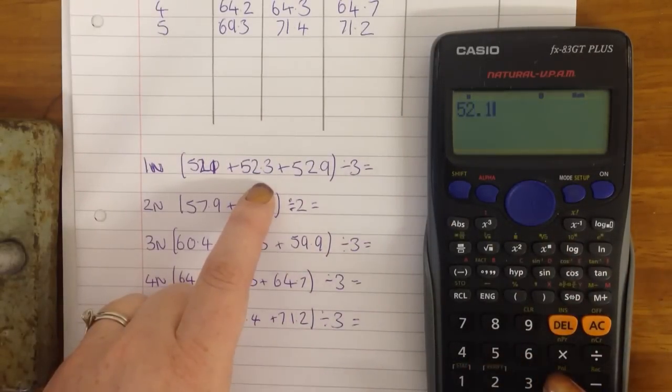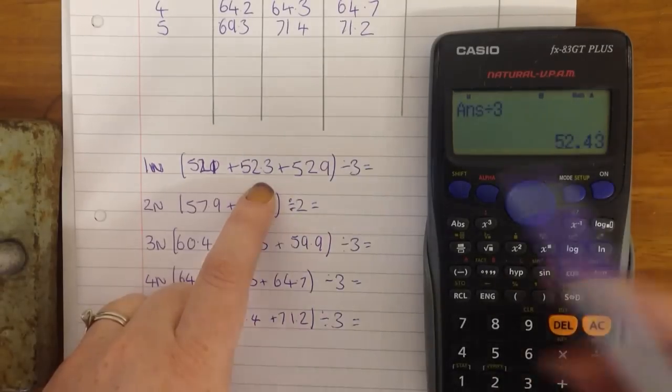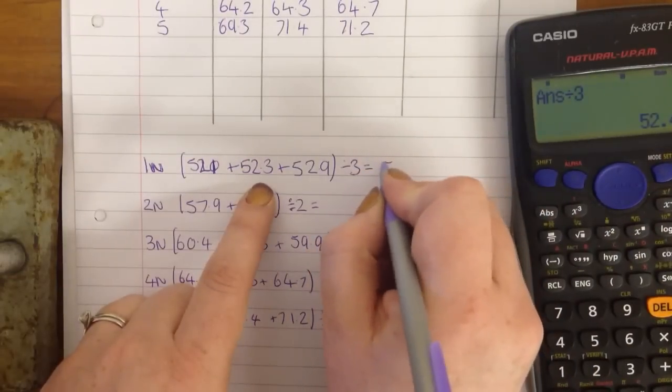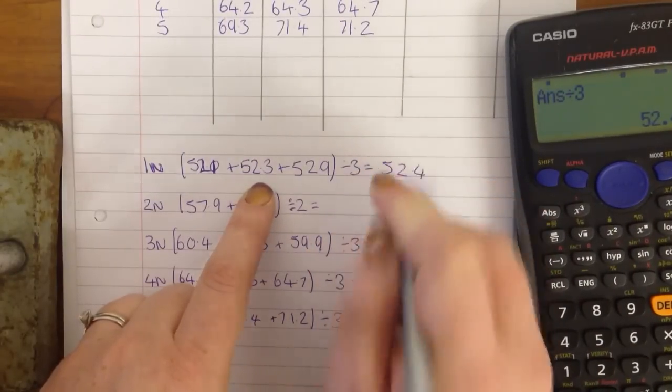It's 52.1 plus 52.3 plus 52.9 equals, then I divide that by 3, equals, turn it into a decimal and the answer is 52.4.